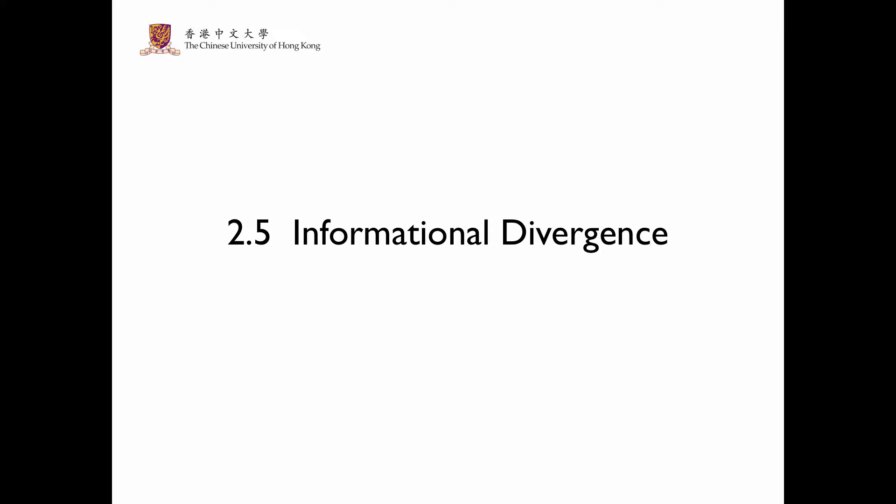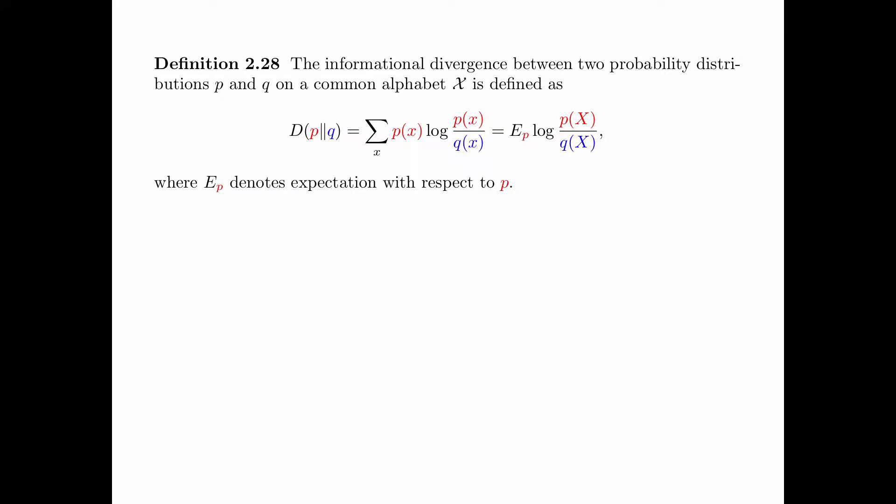Section 2.5: Informational Divergence. Definition 2.28: the informational divergence between two probability distributions p and q on a common alphabet X is defined as D(p||q) equals the summation over x of p(x) log p(x) divided by q(x). This can also be written as the expectation with respect to the distribution p of log p(x) divided by q(x).